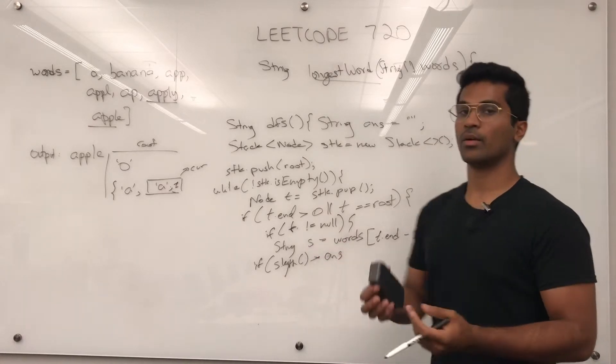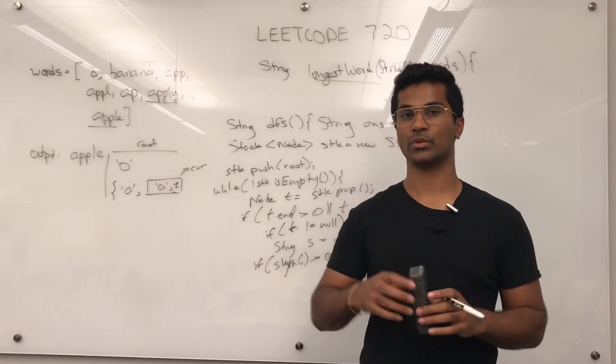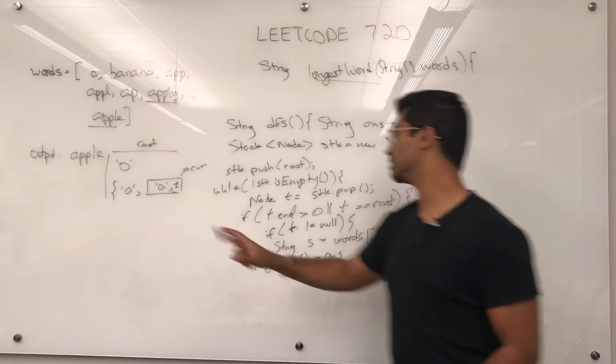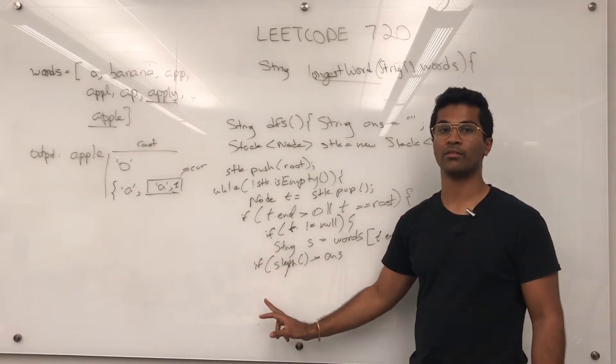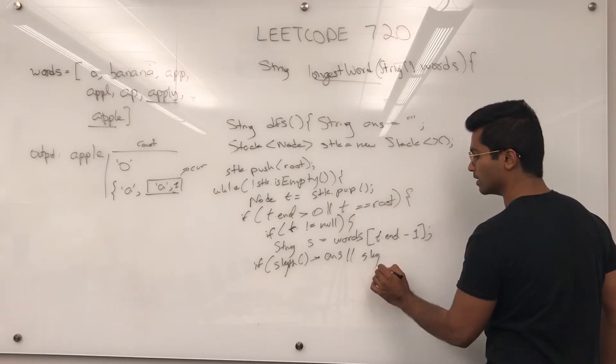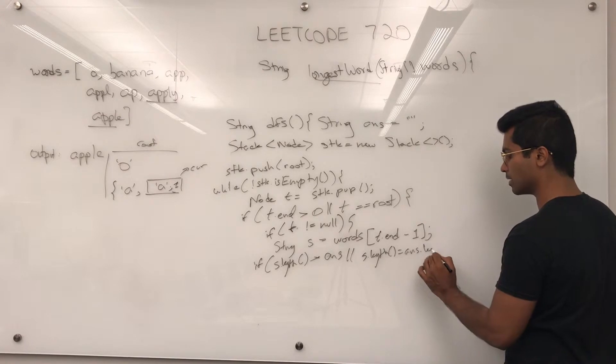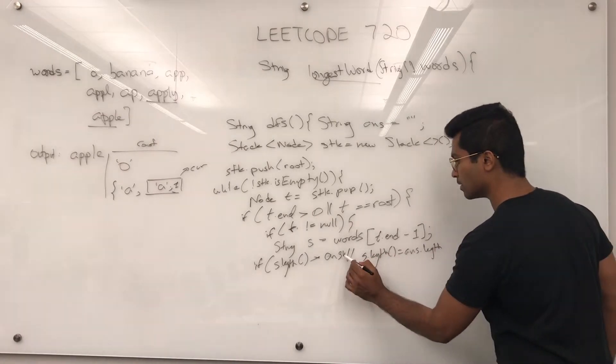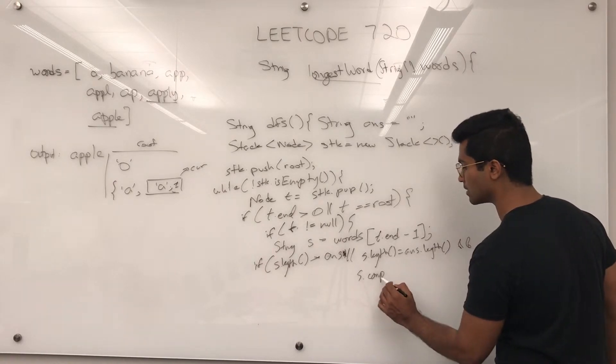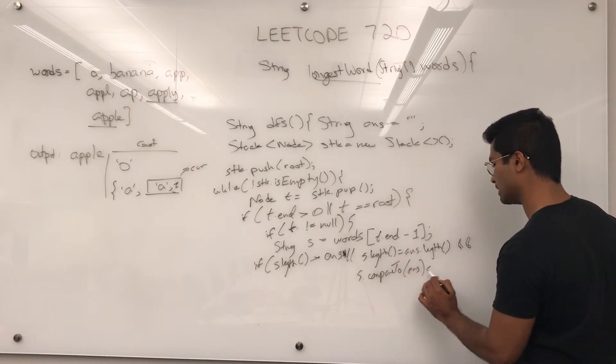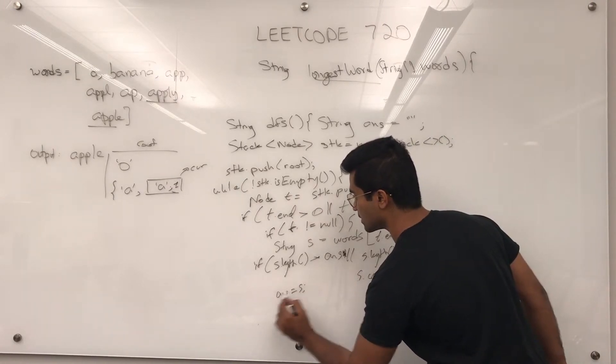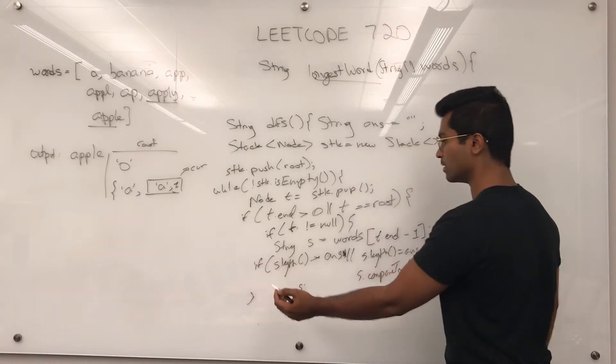If S.length is greater than answer. Now what this means is that when we encounter an end which is greater than zero, what that means is that that's a complete word from our words dictionary. If so, we can consider a viable candidate to see if it's the longest version. If it's that one or if the length of this is equal to our current length and it's lexicographically smaller, S.compareTo(answer) is less than zero. Then we can update this as a viable candidate. Answer is going to be set to S.